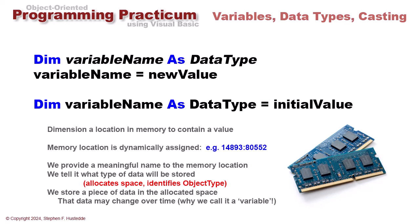We're dimensioning a location in our random access memory to contain some value, and that memory allocation has an address such as 14893:80552. We wouldn't want to work with those addresses, so instead we give it a meaningful name, a variable name that allows us to access that location in memory.